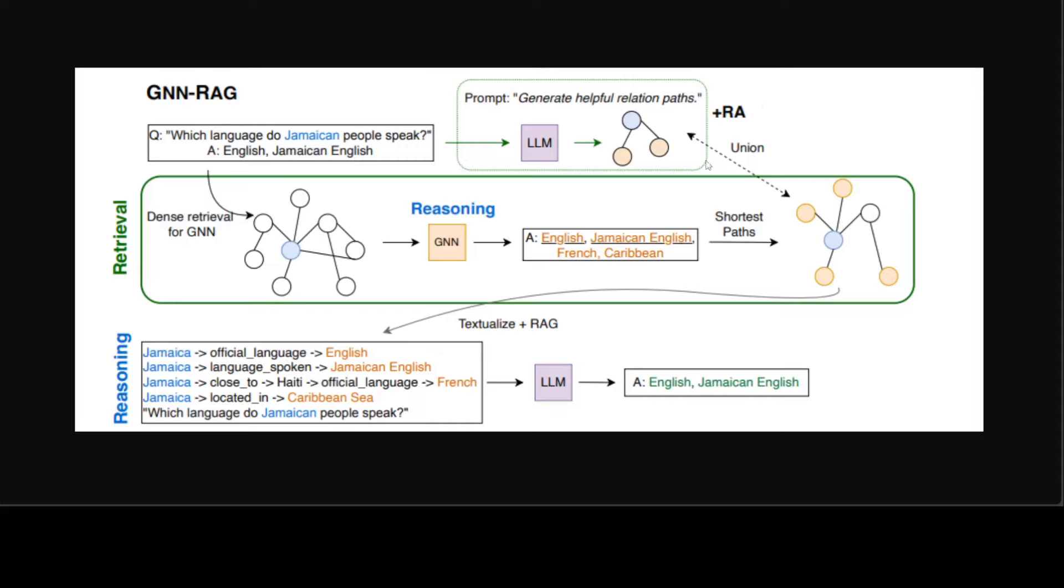First retrieval is done with the help of GNN. Then reasoning is done with GNN. And then there are a few answers and the shortest path is found. And then it is textualized. And then RAG is done and LLM produces the answer. So this is what GNN-RAG is all about.